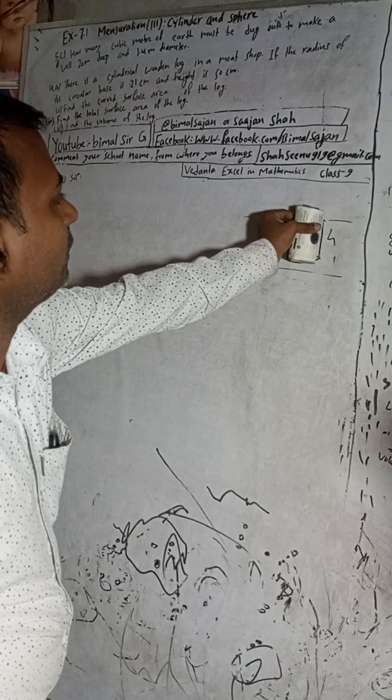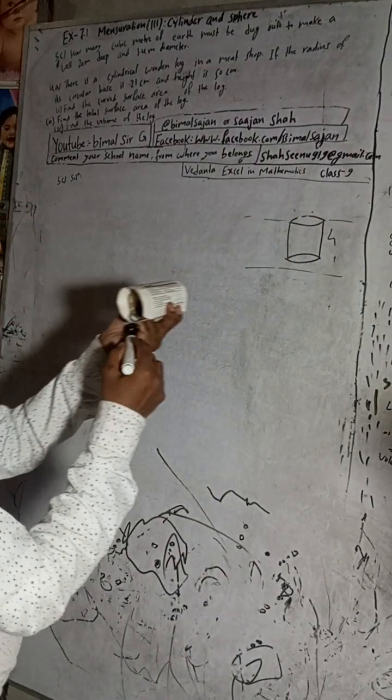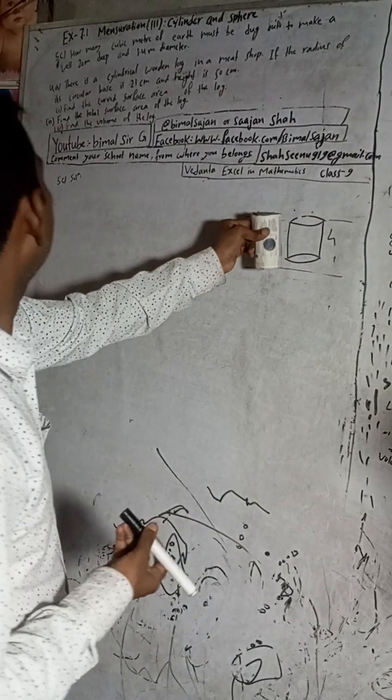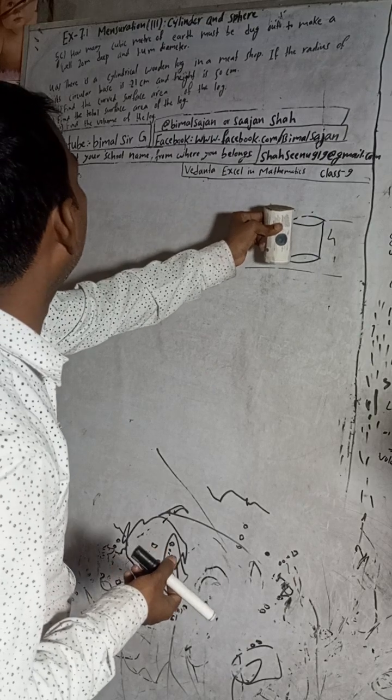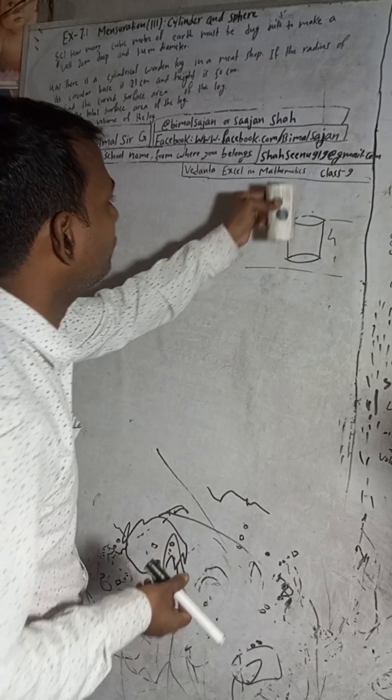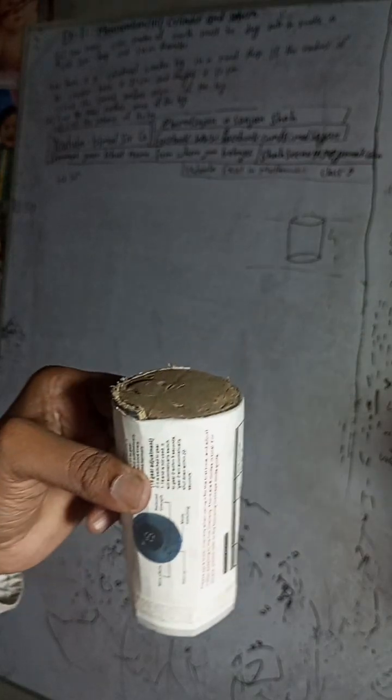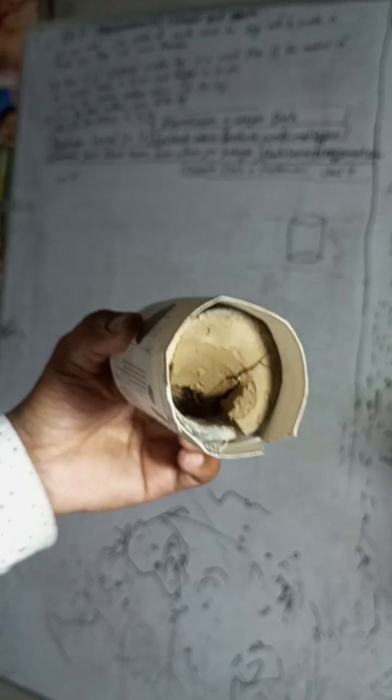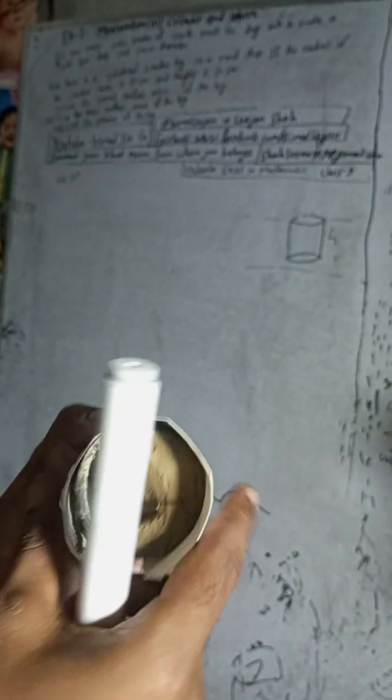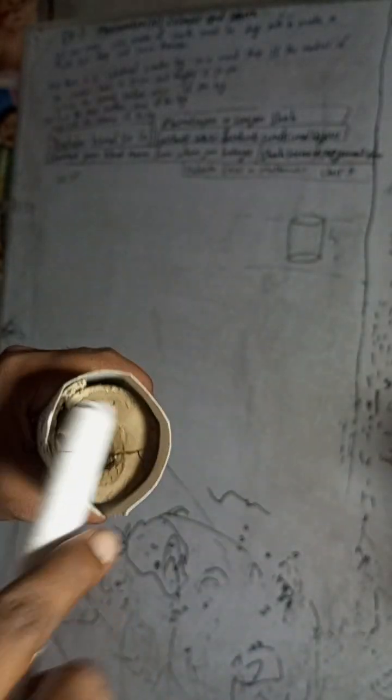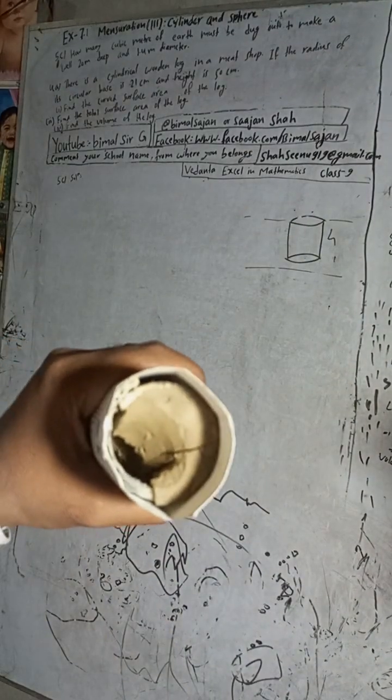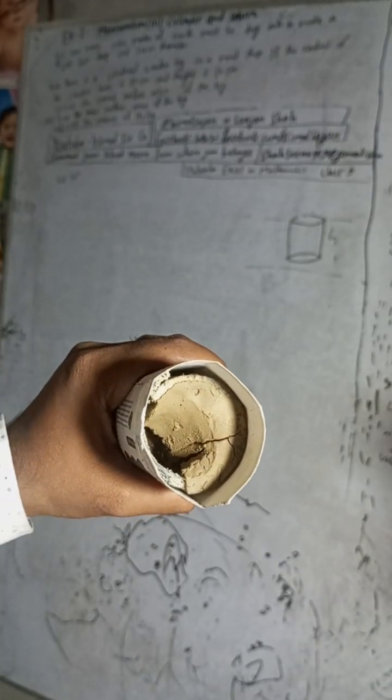In the ground, this is the hole of which shape? Cylindrical shape. How many cubic meters of earth must be dug to make a well? Well means this cylindrical shape. How many cubic meters of earth must be dug out to make a well?